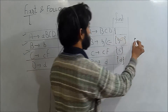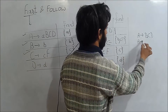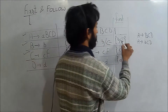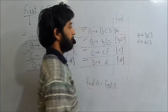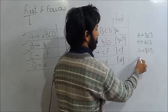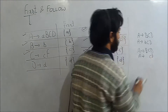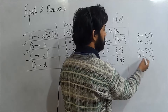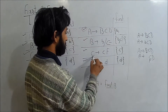FIRST of B is 'b', so in A derives BCD, we put B and get FIRST of A includes 'b'. But since B can derive epsilon, we substitute and get epsilon in place of B. So A derives CD, meaning FIRST of A also includes FIRST of C. FIRST of C is 'c', so FIRST of A includes 'c' as well.